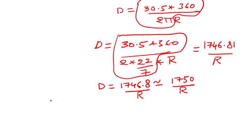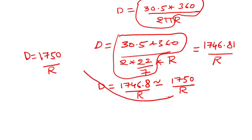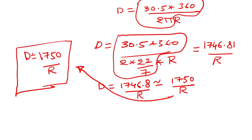So we write D = 1750 / R. This is the relation between degree of curve and radius of the curve.